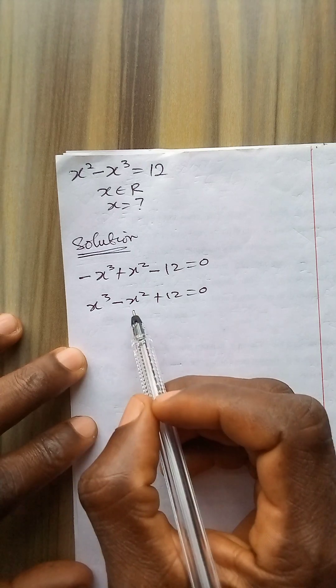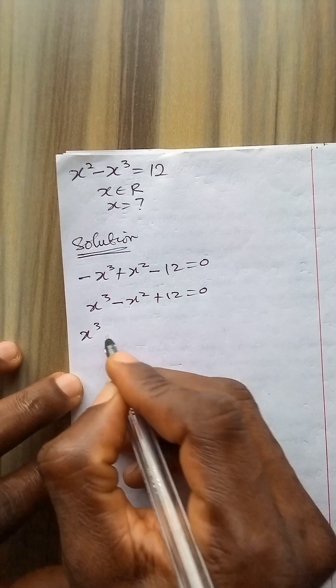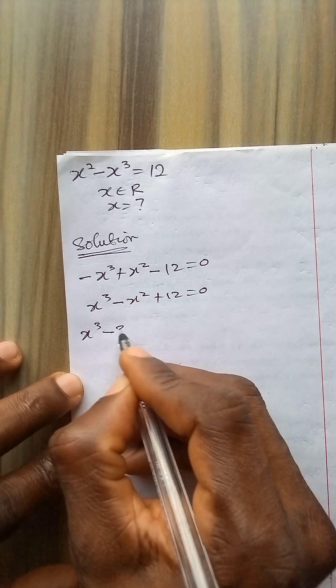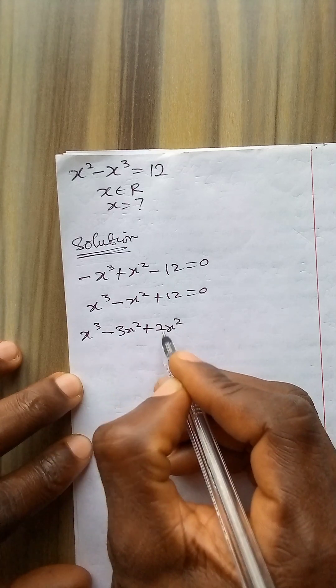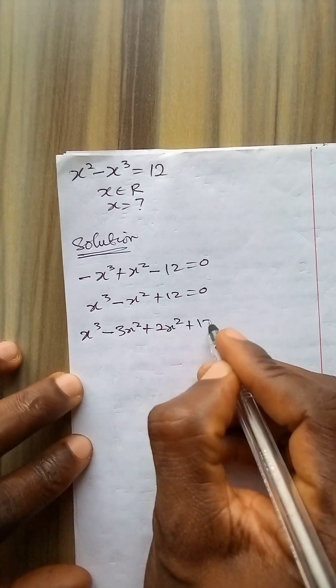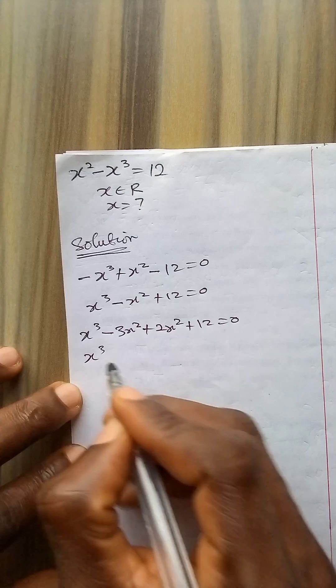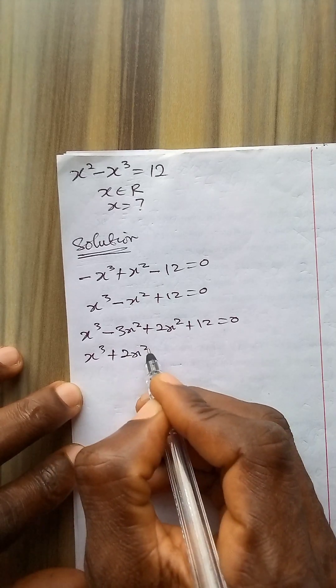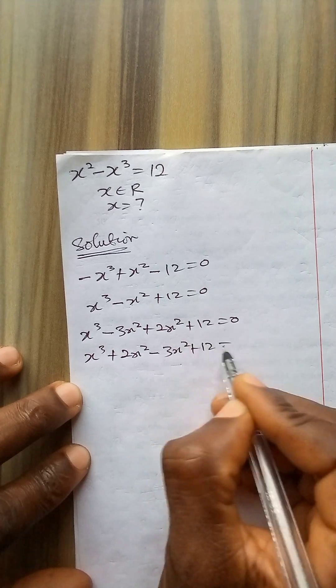Now let us rewrite the middle term of the equation. So it can be written as x to power 3 minus 3x squared plus 2x squared, because minus 3 plus 2 will give us minus 1. So I have minus 1x squared here, then plus 12 equals 0. Now also rewriting it: x to power 3 plus 2x squared minus 3x squared plus 12 equals 0.